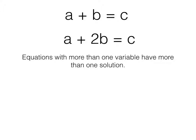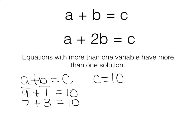Let's take, for example, this first one: a plus b is equal to c. Say I told you that c is equal to 10. Well, if a plus b is equal to 10, then a could be 9 and b could be 1. a could be 7 and b could be 3. a could be 6 and b could be 4, and so on.